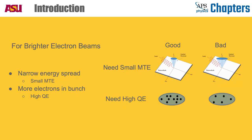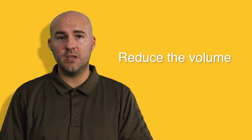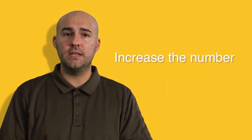When we talk about the brightness of an electron beam, we are essentially talking about having a large number of electrons compact in a small volume and traveling in the same direction. So with that in mind, I'm sure many of you can think of a few ways we can improve the brightness. Either we reduce the volume of the electron beam or we increase the number of electrons in the beam. And for the most part, that is correct.